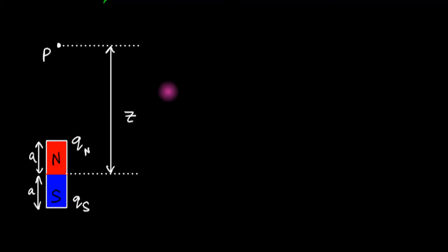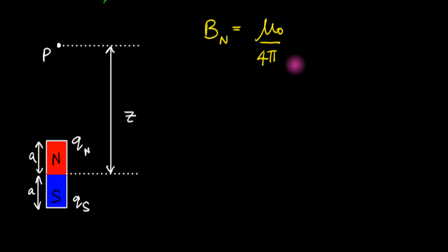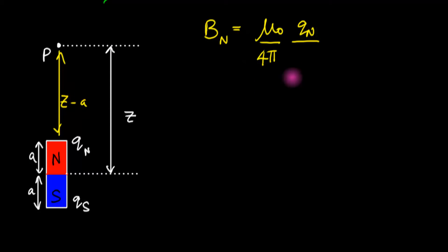To calculate the magnetic field due to this dipole, I need the field due to each quote-unquote magnetic charge. The north pole q_N acts like a positive magnetic charge and creates a field B_N. That's going to be mu-naught over 4-pi times q_N divided by r-squared. The distance from q_N to point P is z minus a, so we get (z minus a) squared in the denominator, and this field points outward.